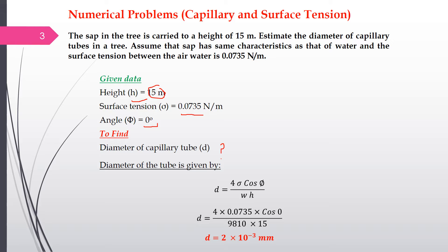The formula for the diameter of the capillary tube is: d equals 4σ·cos(φ) divided by w·h, where w is the specific weight. Specific weight w equals ρ·g, where ρ is the density of water, which is 1000 kg/m³, multiplied by acceleration due to gravity, giving 9810 N/m³.